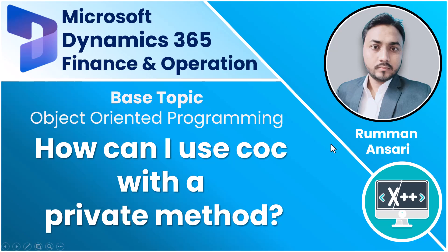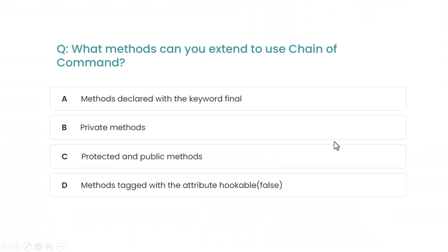Let's go to the question directly. The question is: what method can you extend to use Chain of Command? Option A: a method declared with the final keyword. Option B: a private method. Option C: protected and public methods. Option D: methods tagged with the attribute Hookable set to false.